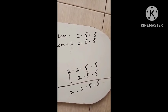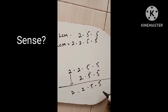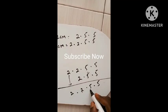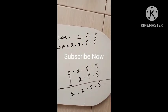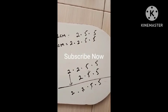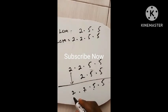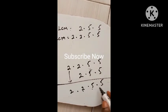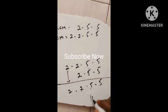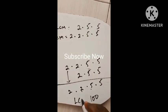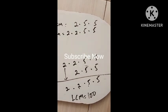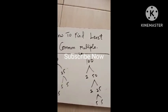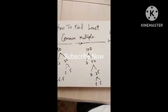Now you multiply everything together. So 2 multiplied by 2 gives you 4, then 4 multiplied by 5 gives you 20, and 20 multiplied by 5 gives you 100. So the LCM of 50 and 100 is equal to 100, using the prime factorization method. Question two is for you — make sure you give it a try and leave your answer in the comment section below.